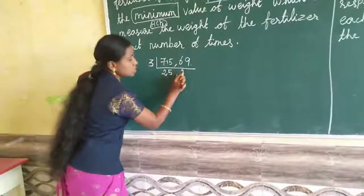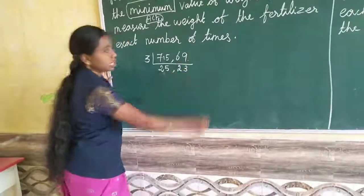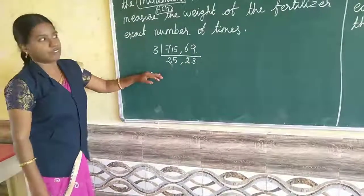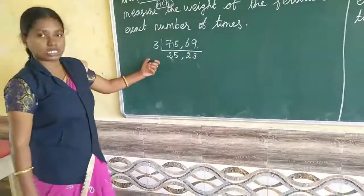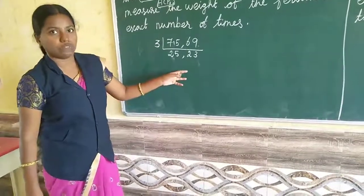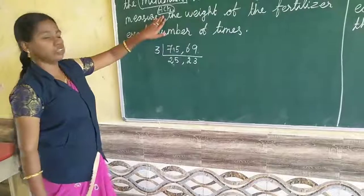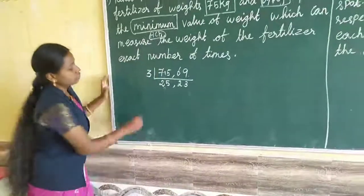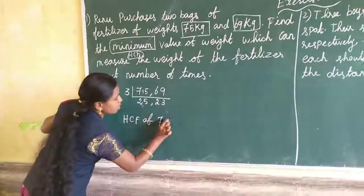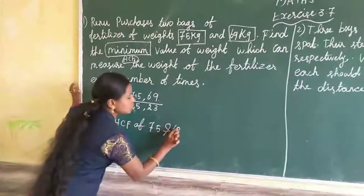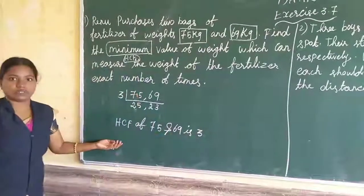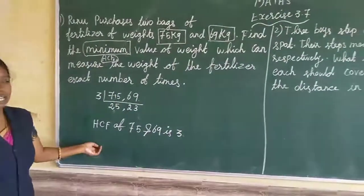See here, 2, 3, 6. 3, 3, 9. These two numbers will not come in any number, so up to this is enough. If it is HCF means after this is enough. So HCF of 735 and 69 is 3. This is the answer for this sum.